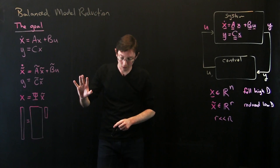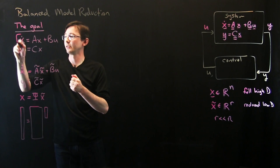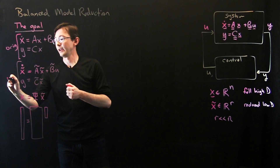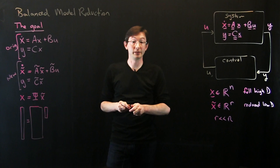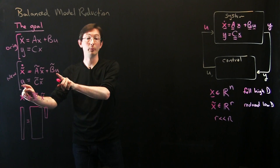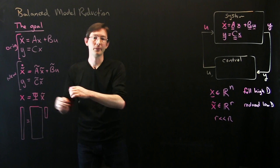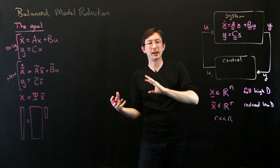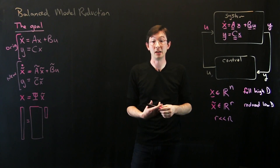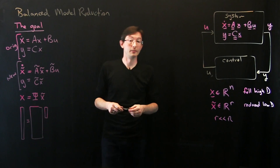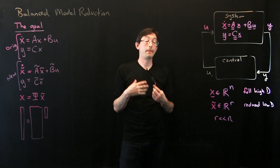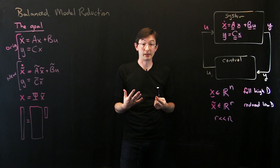So the goal is: starting from the original system, find a new system in terms of x̃ — a much smaller state — that best captures the input-to-output dynamics from u to y. 'Best captures' is a bit vague, but there are ways of formalizing what that means mathematically, which we'll do in a bit. Let me first give a simple example that illustrates some of these ideas.